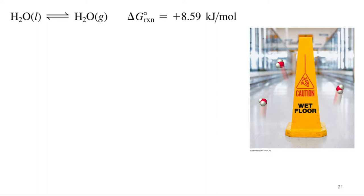Or what do we need to think about if we want to apply it to a different scenario? So this, water in the liquid phase going to water in the gas phase, that is the physical process for water evaporating. And if you calculate delta G for this process, we would get plus 8.59 kilojoules per mole. What does that mean? Non-spontaneous.